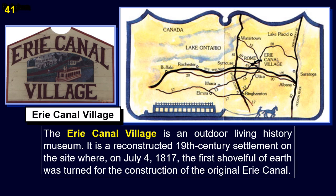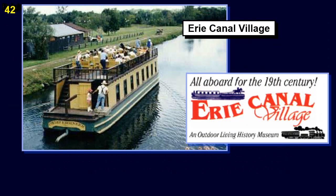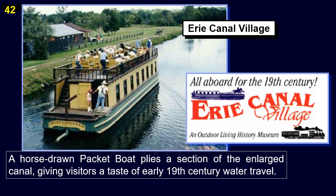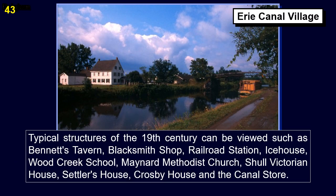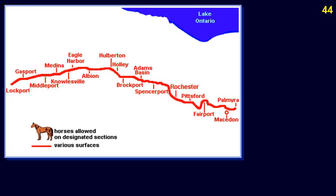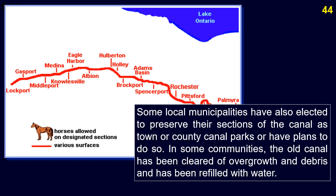Erie Canal Village is an outdoor living history museum — a reconstructed 19th-century settlement on the site where, on July 4, 1817, the first shovelful of earth was turned for the construction of the original Erie Canal. A horse-drawn packet boat plies a section of the enlarged canal, giving visitors a taste of early 19th-century water travel. Typical structures include Bennett's Tavern, Blacksmith Shop, Railroad Station, Ice House, Wood Creek School, Maynard Methodist Church, Shell Victorian House, Setch Horse House, Crosby House, and the Canal Store. Some local municipalities have also elected to preserve their sections of the canal as town or county canal parks. This is a commercial boat locking through Baldwinsville Lock 24.